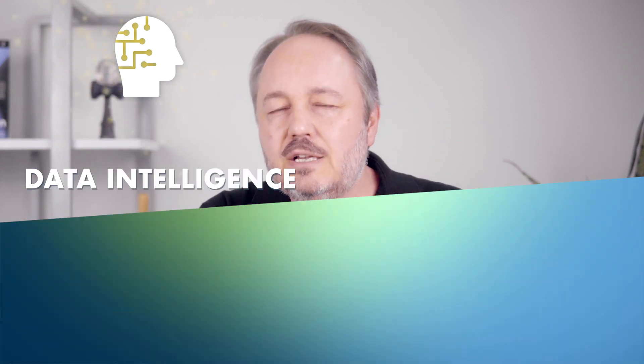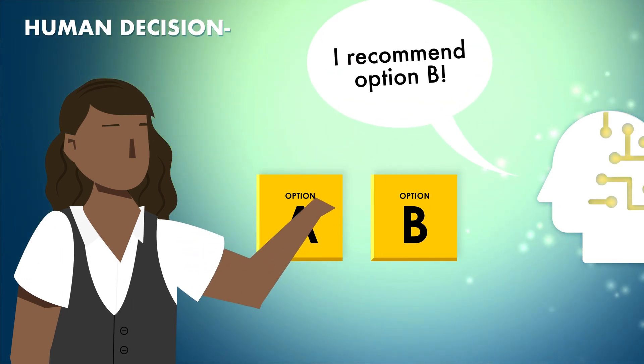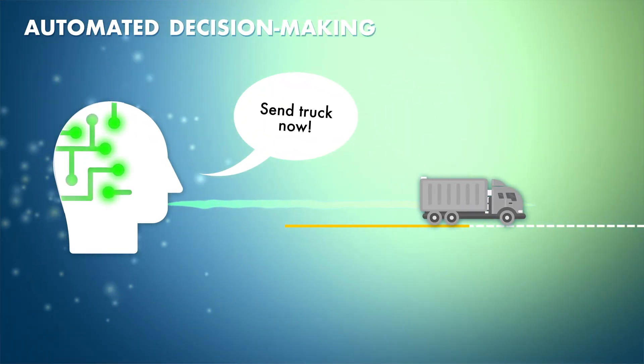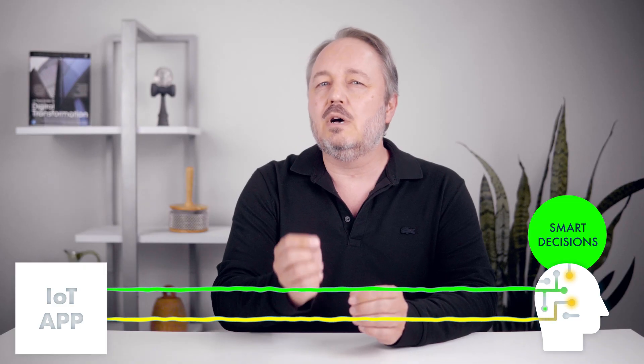These systems then use this data as input to produce different forms of data intelligence that we can use to improve both human and automated decision making. An AI system can process, analyze, and learn from streams of telemetry data, and that data can also act as input into its automated decision-making logic.